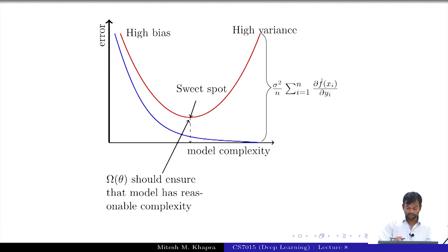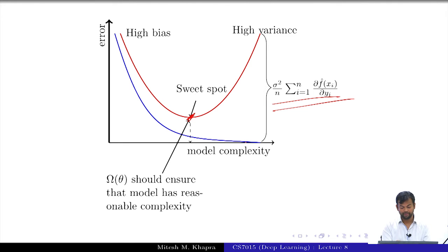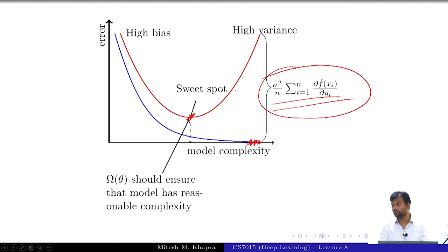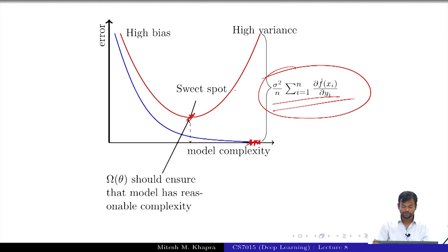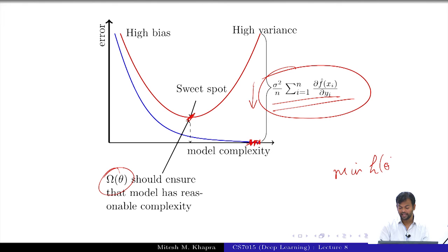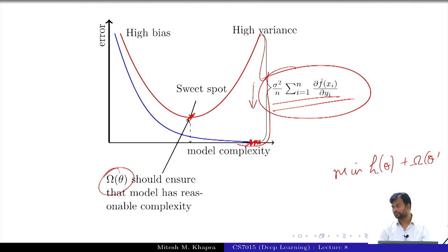This is the sweet spot we are aiming for. The gap between training and validation error is actually this complexity quantity, because we are making an overly optimistic estimation of the error while ignoring that term — that is why we see high validation error. We should ensure using omega theta that this gap is minimized. Therefore our objective should be to minimize L(theta) plus omega theta, so the model generalizes better on the test data.